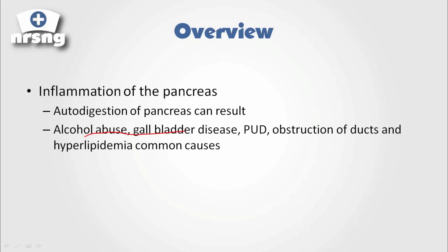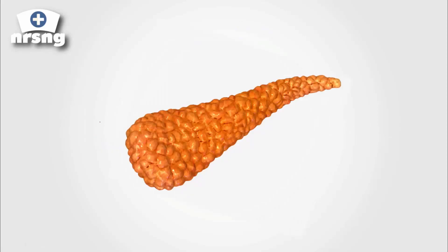The pancreas is both an endocrine and an exocrine gland. Endocrine means it secretes hormones into the bloodstream. Some of the things the pancreas does: it helps with digestion of food, and it does that through a couple of different enzymes and hormones.